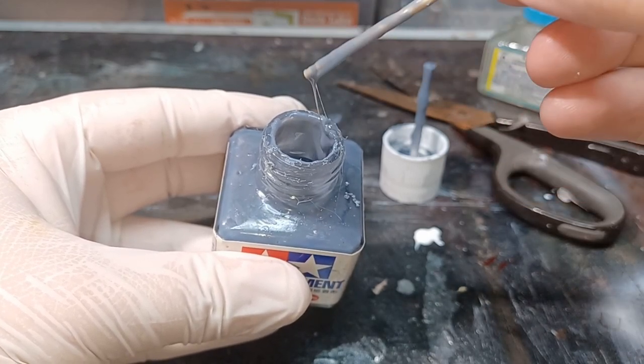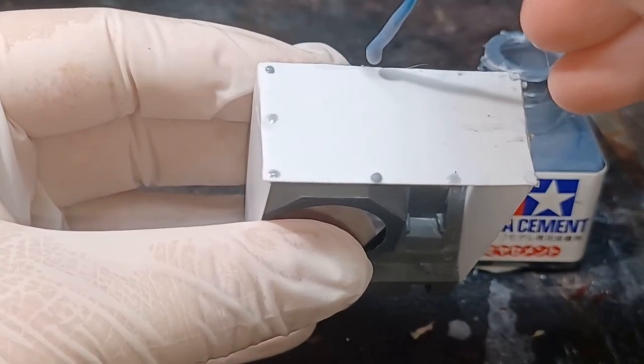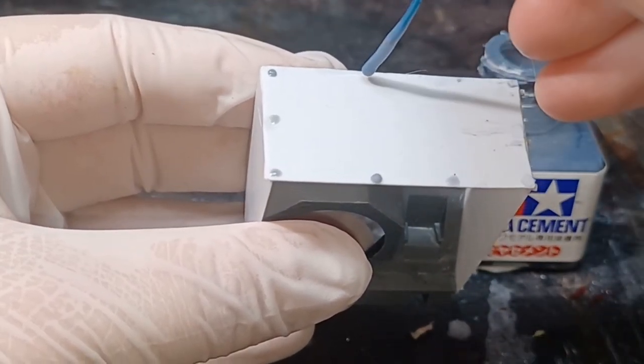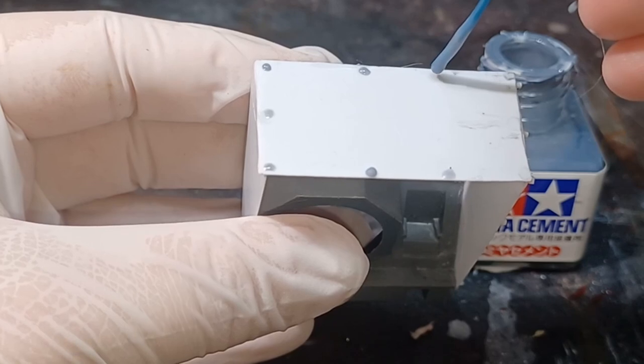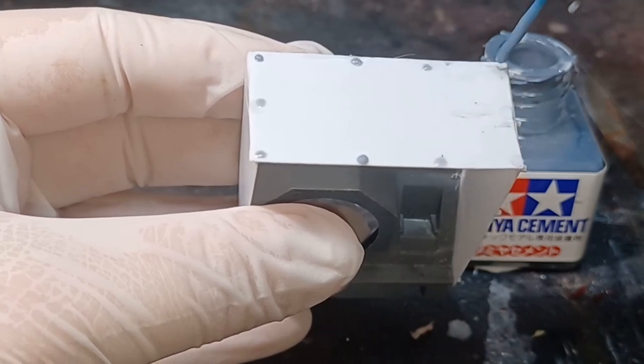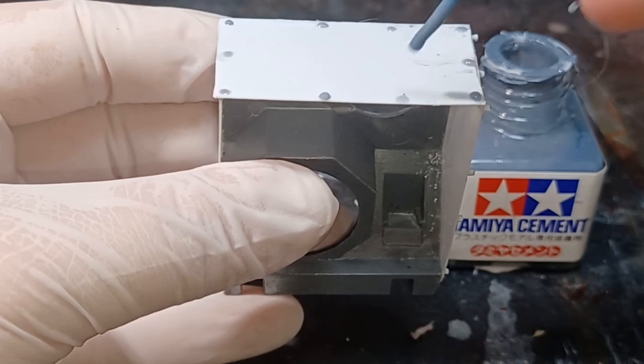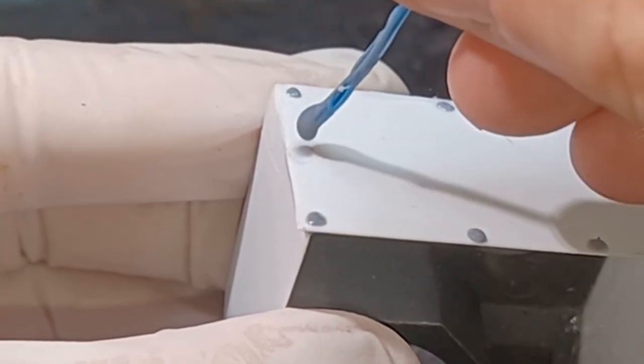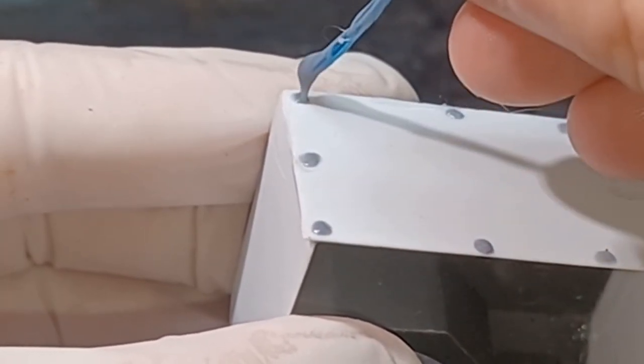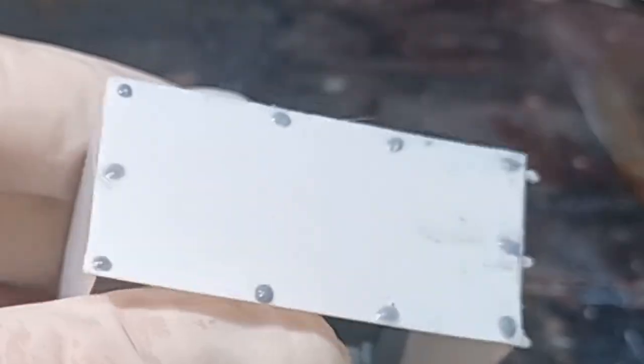To apply the rivets, I dip a paper clip into the sprue goo, leaving a little bit on the tip. And like with the PVA glue on the previous rivets, I just go around dotting this onto the model. When placing it down, if it's too runny or the wrong shape, you just wipe it away with your finger. Once I'm happy with the shape, I just let that dry. It takes about 20 minutes to fully dry.